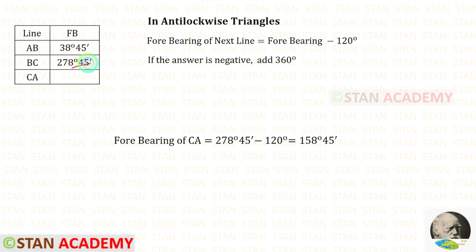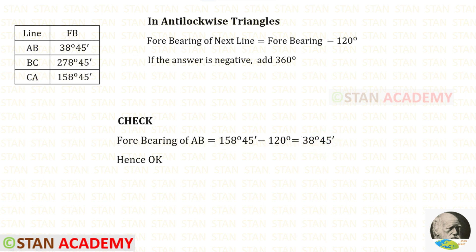Now using this forebearing, let us find the forebearing of CA. 278 degrees 45 minutes minus 120 degrees gives us 158 degrees 45 minutes. Now let us apply a check.